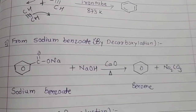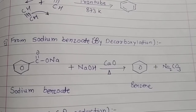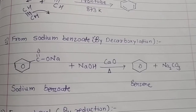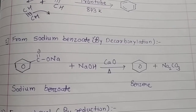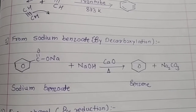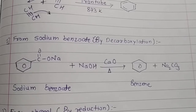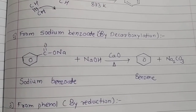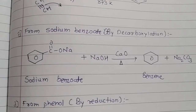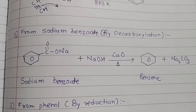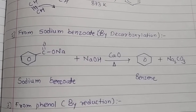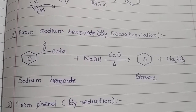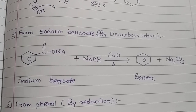The second method for preparation of benzene is from sodium benzoate, that is by decarboxylation. Decarboxylation is removal of carbon dioxide. The reactant is sodium benzoate, which reacts with NaOH in the presence of sodalime, and we get benzene.